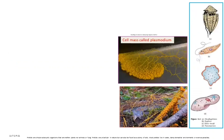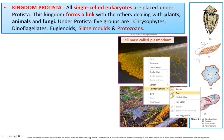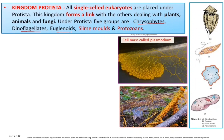Kingdom Protista consists of single-celled eukaryotes. This kingdom is a single-celled group set apart from plants and animals. Under protists, there are five groups: chrysophytes, dinoflagellates, euglenoids, slime molds, and protozoans.